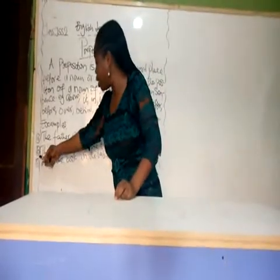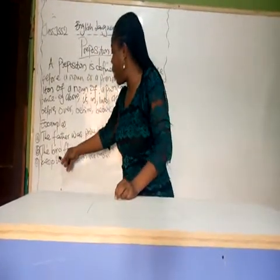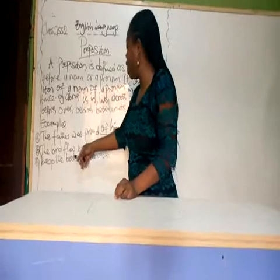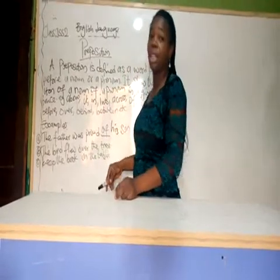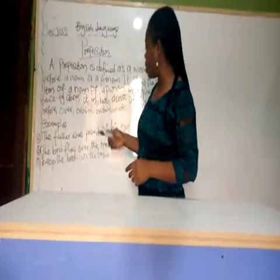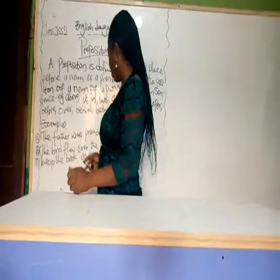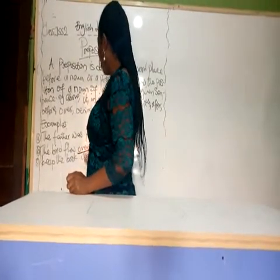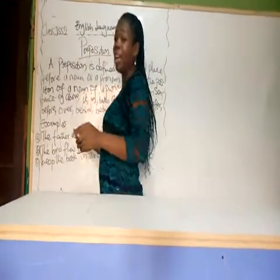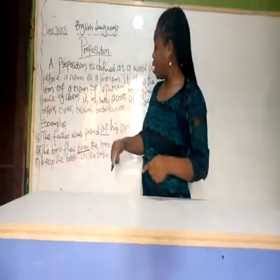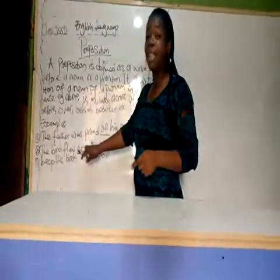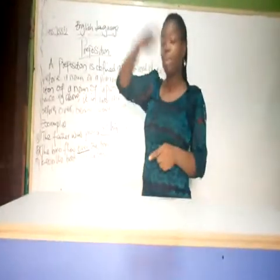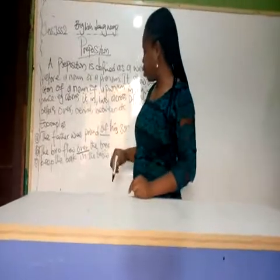In the second example: the bird flew over the tree. The bird flew over — it was over the tree. So what is the preposition there? Over. Telling us that the bird flew over the tree.